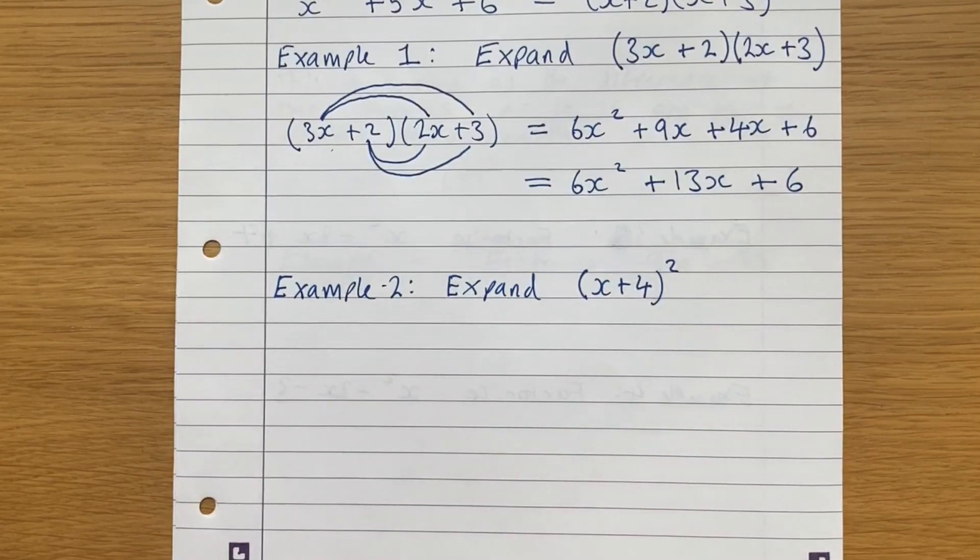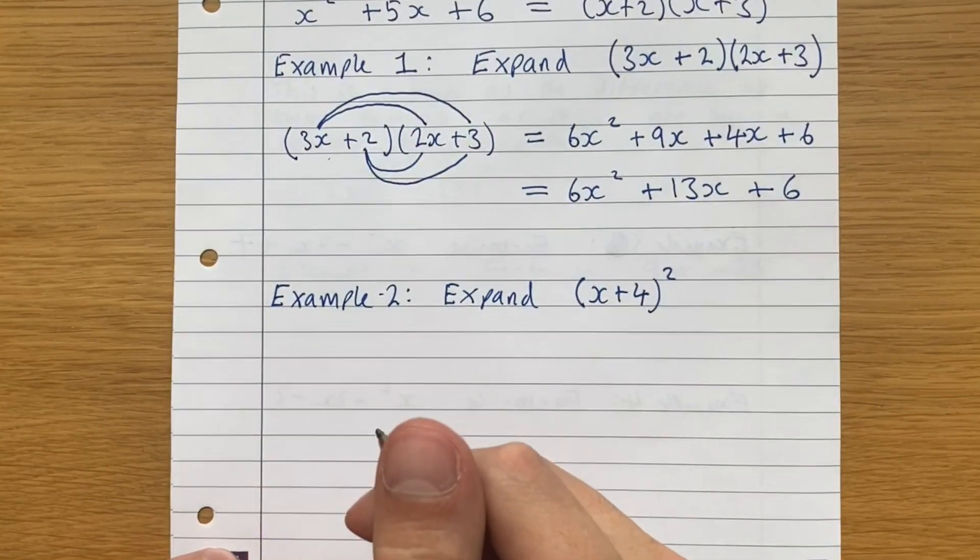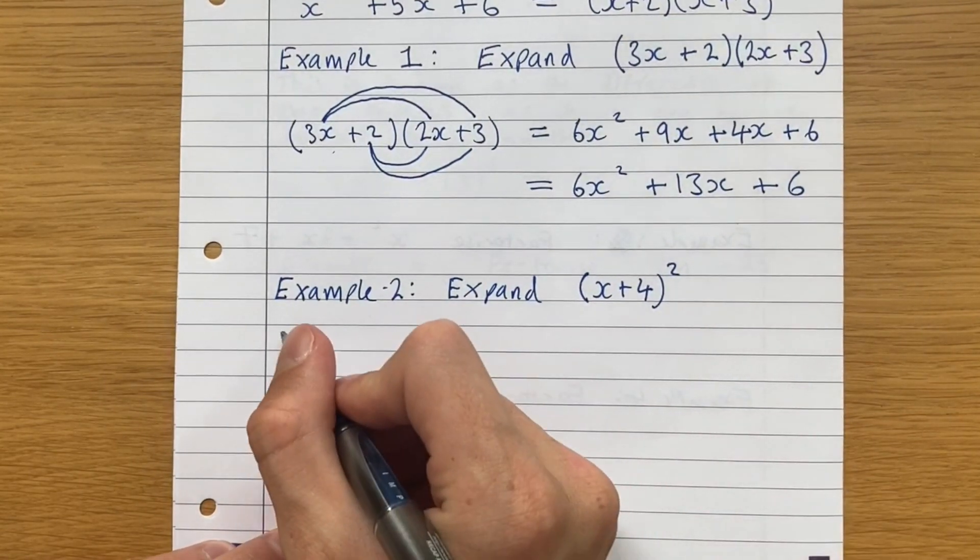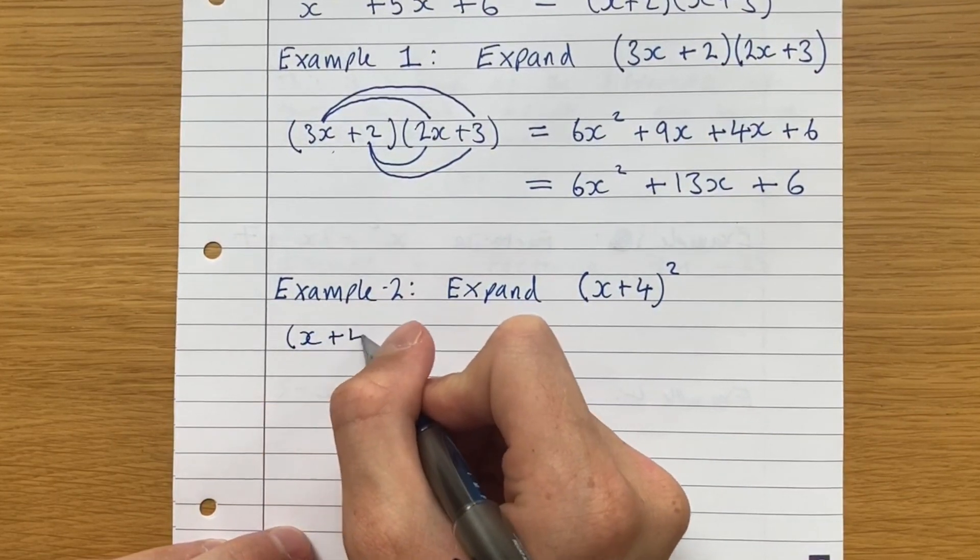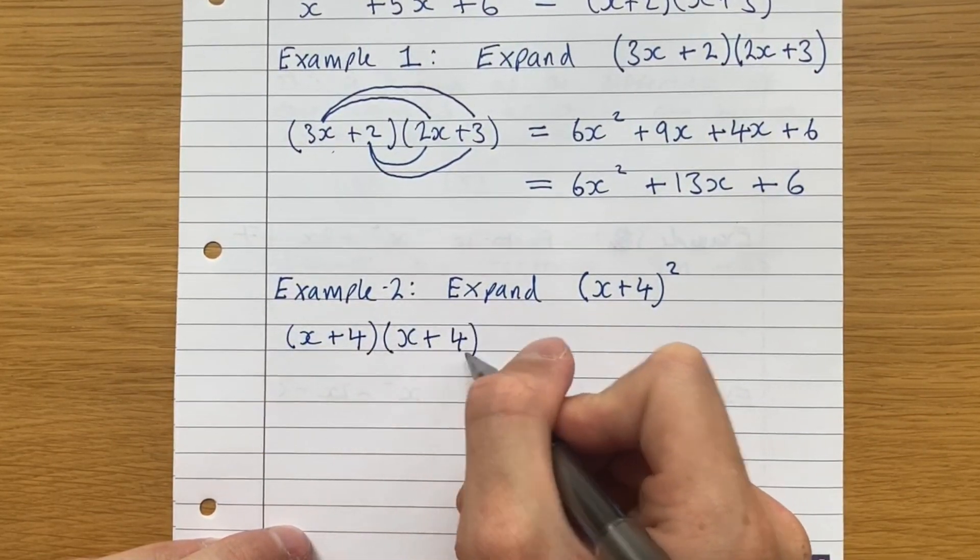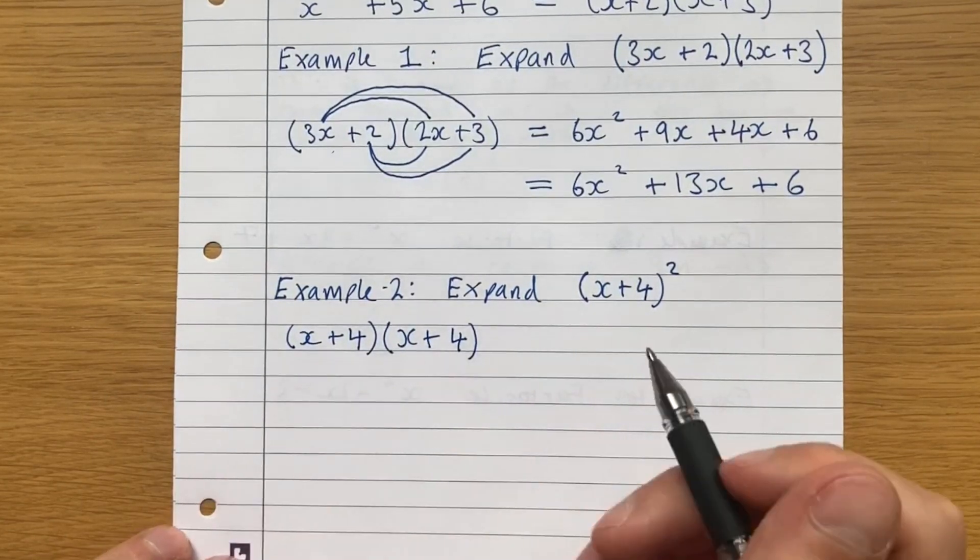Now we're asked to expand x plus 4 all squared. So the first thing to notice here is that you just want to write out what that means. x plus 4 squared is just x plus 4 times x plus 4. And now we do the exact same thing.